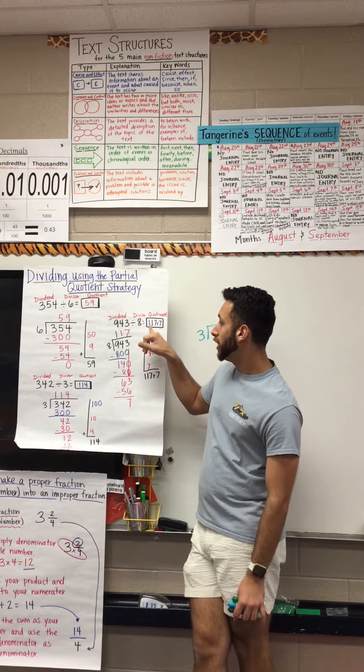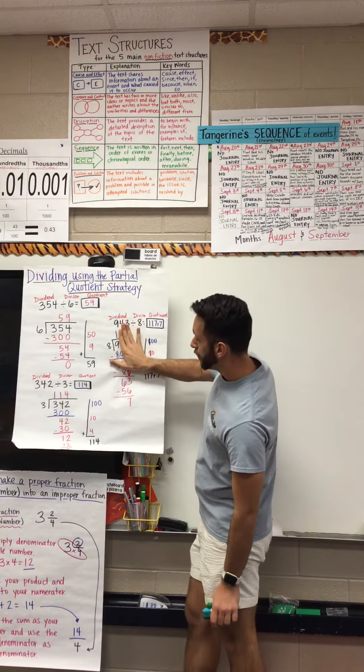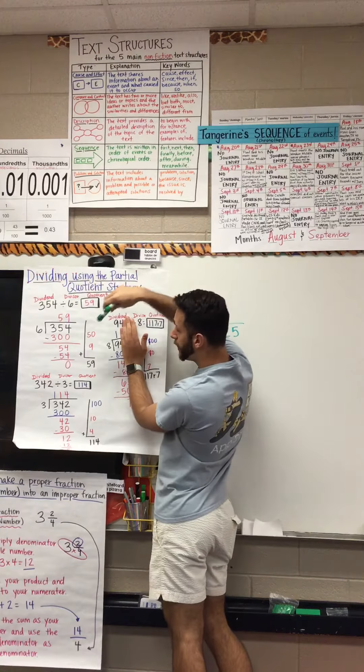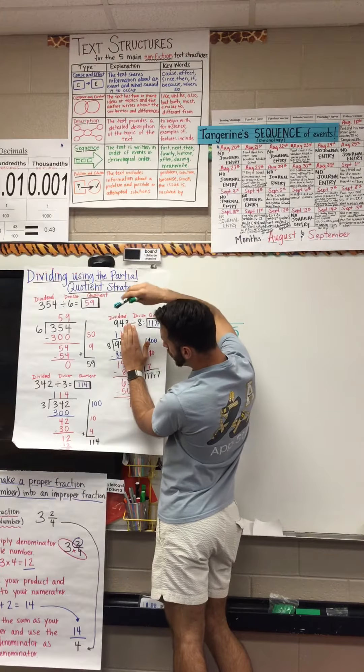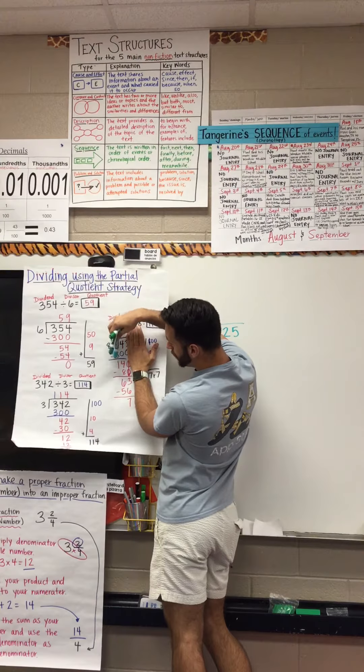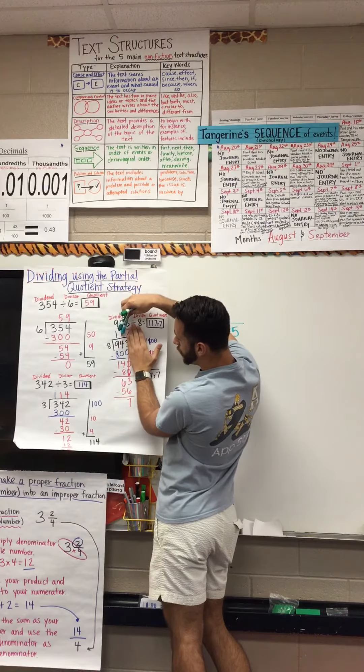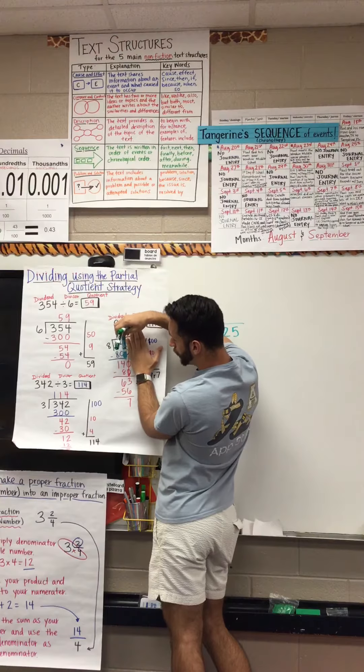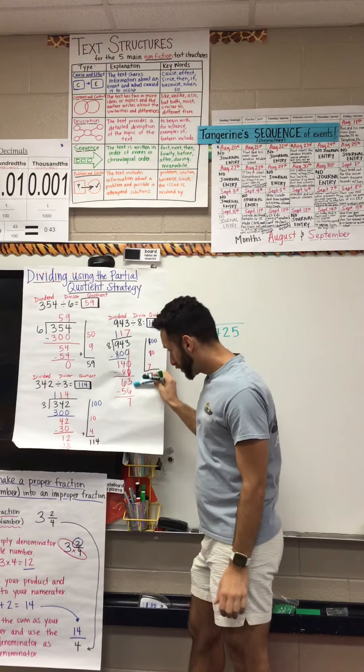Now watch how this one goes. Eight goes into nine one time. Eight times one is eight, subtract and you get one. Then, let's go over to that zero. 4 minus 0 is 4. How many times does eight go into 14? Eight goes into 14 one time. One times eight is eight. You subtract that eight from 14 to get 6, then you put the zero here and bring down this 3 to make 63.